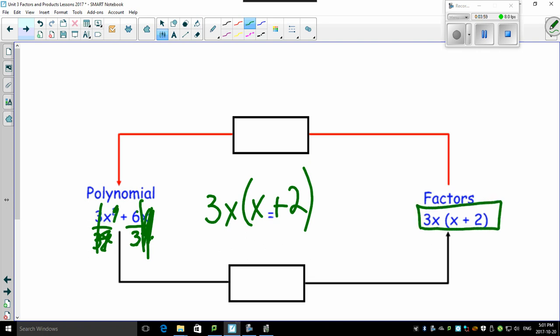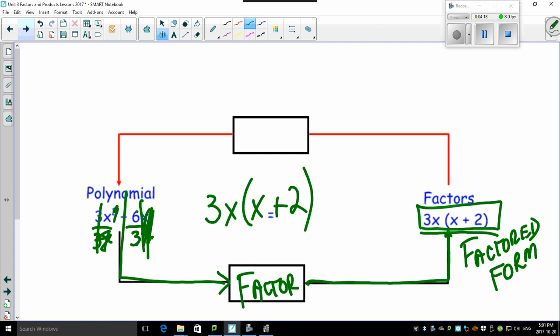So, we can take a polynomial and we can factor it. And when we factor it, we get this factored form. And that's what it's called. Factored form. And these two things are the factors of the factored form.